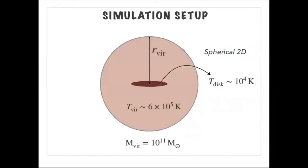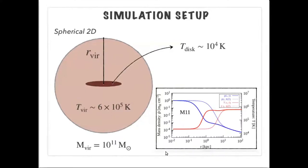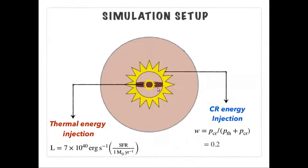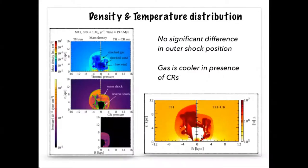We performed a very simple idealized simulation. We had a disk of 10 to the power 4 Kelvin gas surrounded by a hot halo gas with temperature equal to the virial temperature of the halo. The potential was for a galaxy with virial mass 10 to the power 11 solar mass. The density and temperature profile of the initial setup is shown in the plot at the bottom right corner of this slide. We injected thermal energy corresponding to the star formation rate in the central region and wherever a shock is detected, the total pressure was redistributed between the thermal and cosmic ray component depending upon this ratio W.